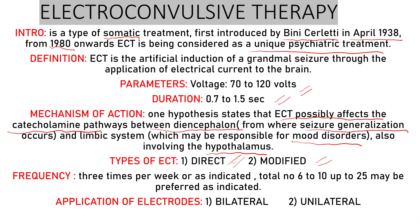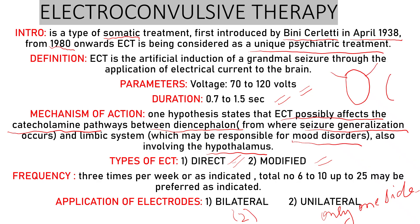The frequency of ECT is three times per week. ECT can be bilateral or unilateral. Bilateral means electrodes are placed on both sides of the head, and unilateral means electrodes are placed on only one side.